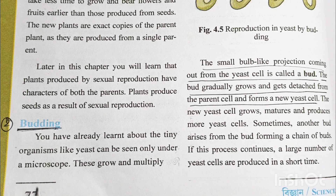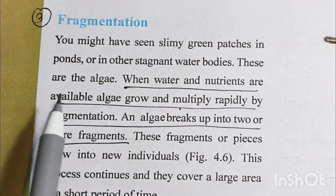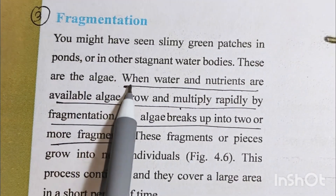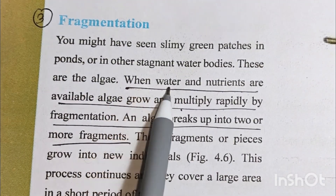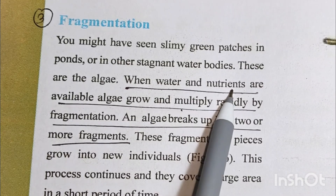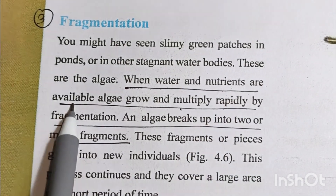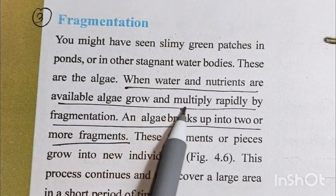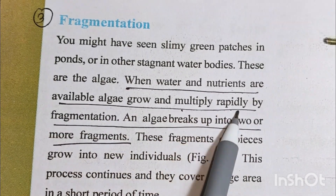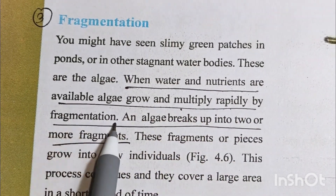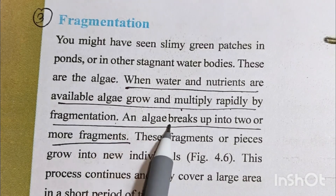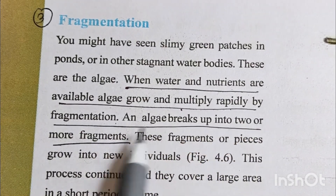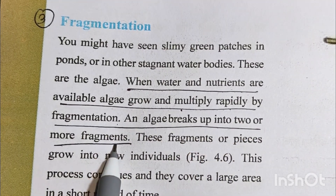Number 3 is fragmentation. When water and nutrients are available, algae grow and multiply rapidly by fragmentation. Algae break up into 2 or more fragments.